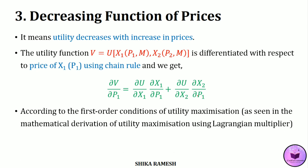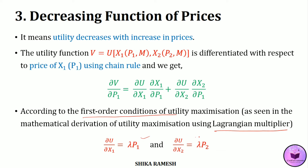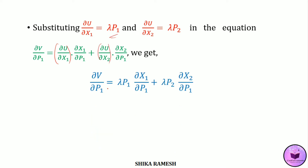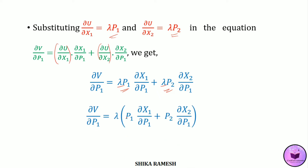From the first-order conditions of utility maximization using the Lagrangian multiplier, we have ∂u/∂x1 = lambda·p1 and ∂u/∂x2 = lambda·p2. Substituting these into ∂v/∂p1 and factoring out lambda, we get ∂v/∂p1 = lambda · [p1·(∂x1/∂p1) + p2·(∂x2/∂p1)].